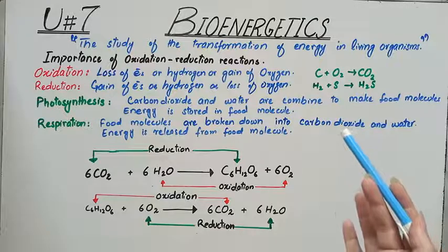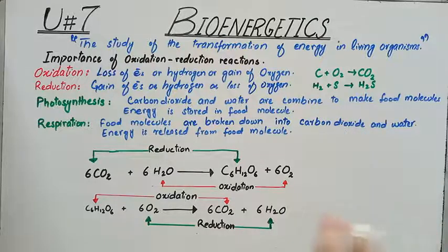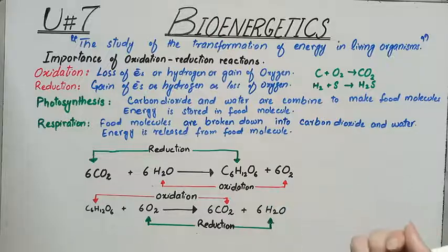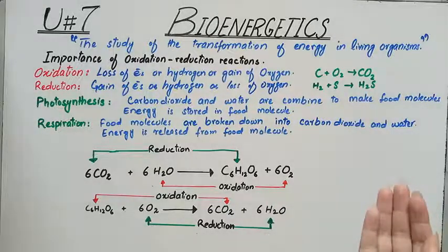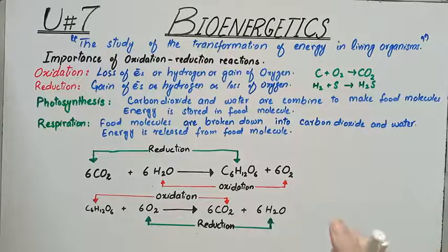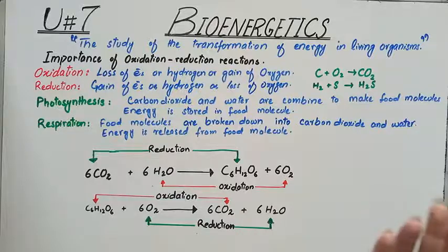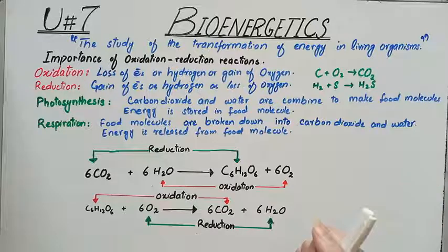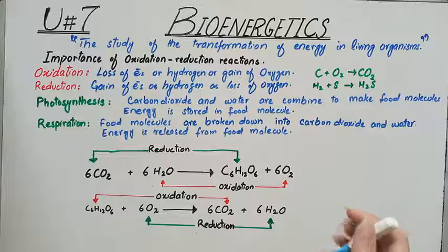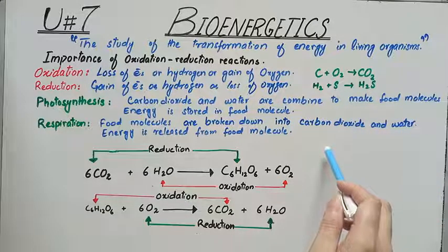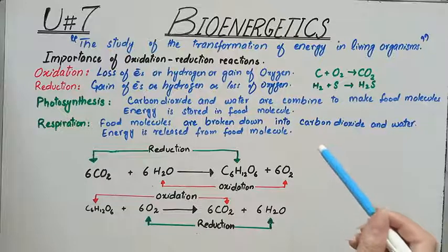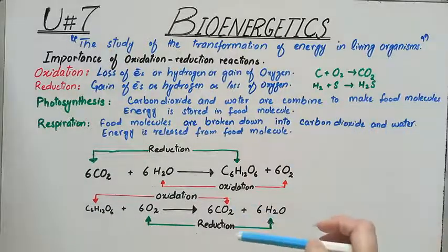The sun is the ultimate source of energy for all living organisms. However, only autotrophs use this energy directly. They capture solar energy and convert it into stored chemical energy through the process of photosynthesis. The energy stored in food is then transformed into mechanical and heat energy during respiration. So the two main processes involving energy transformation are photosynthesis and respiration.